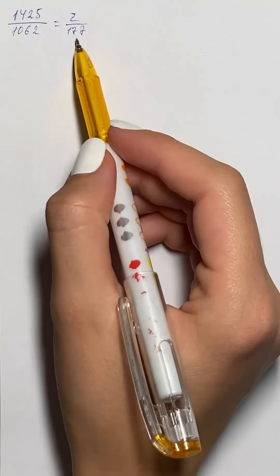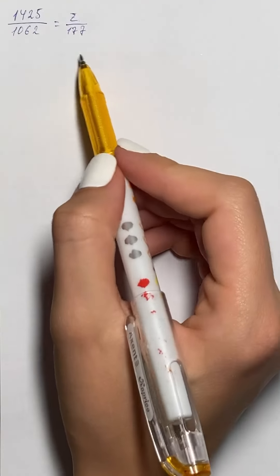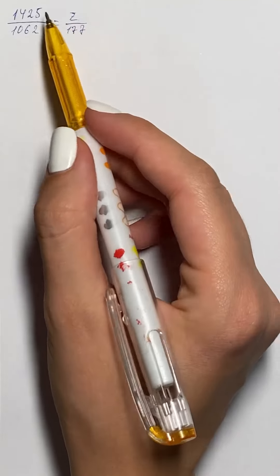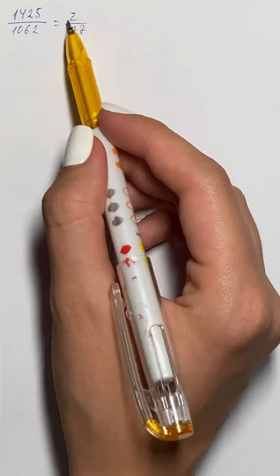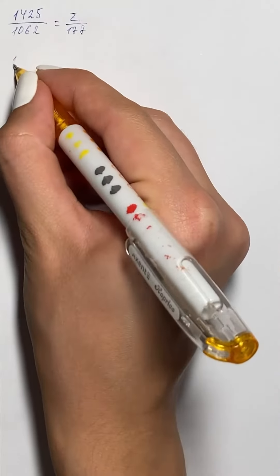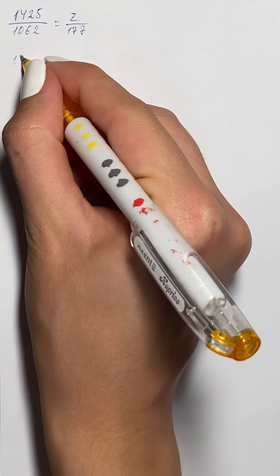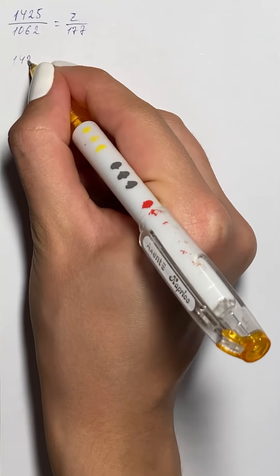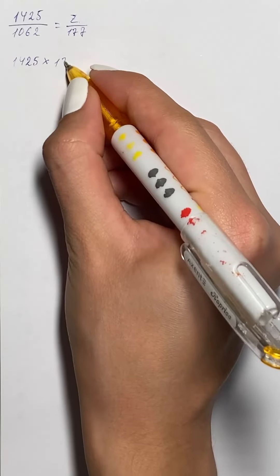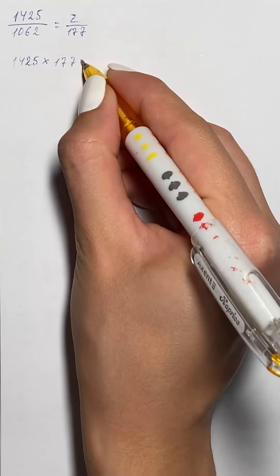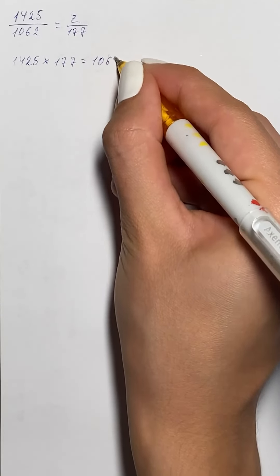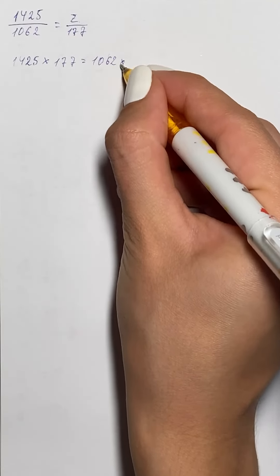If two ratios are equal, then it's a proportion, and we're going to use cross products to find the unknown number. So that's going to be 1425 times 177 equals 1062 times z.